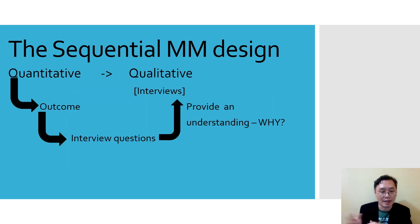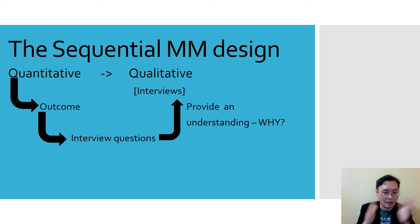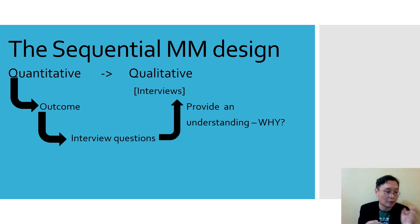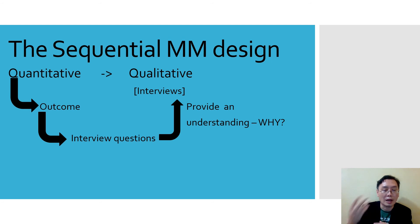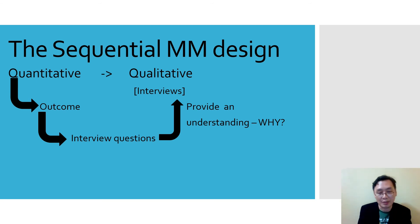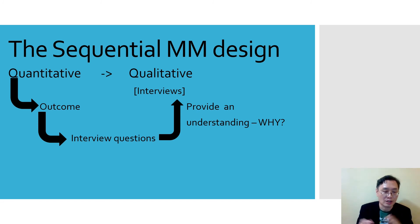Next is the sequential mixed method design. Basically it follows a sequence: quantitative first, then qualitative. After you collect and analyze the quantitative data in the first stage, you formulate interview questions to use in the qualitative stage, where you carry out interviews with participants to provide an understanding of why the changes happened. You might focus on their experiences, feelings, and the process they went through during the intervention.